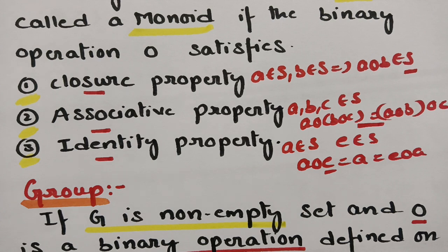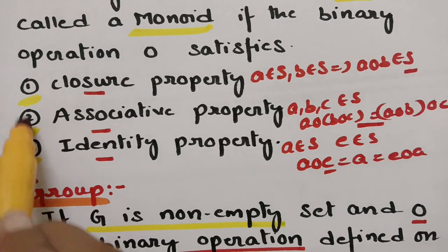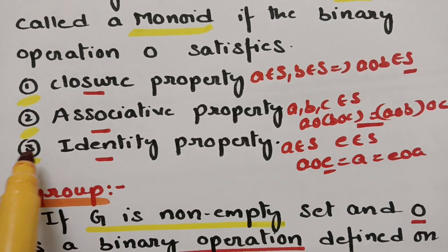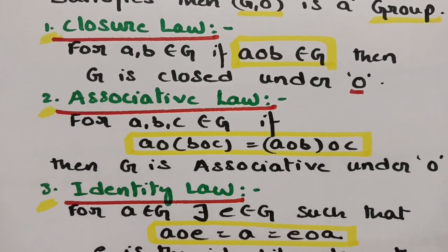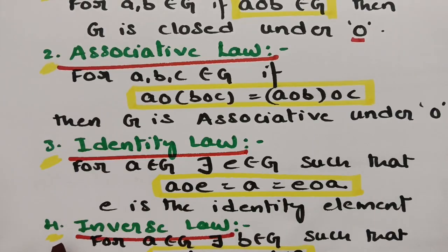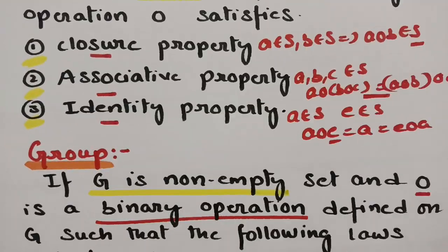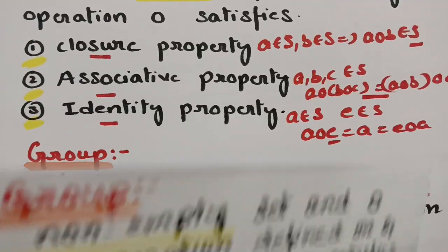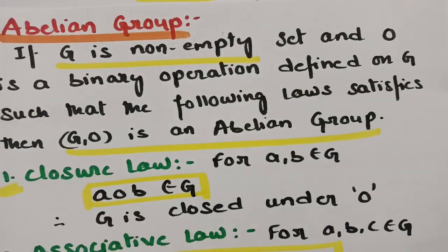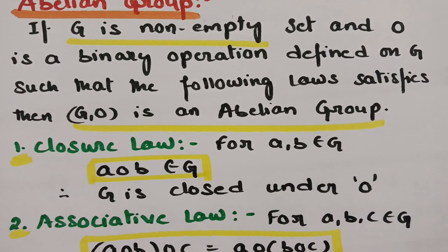To summarize the hierarchy: if it satisfies the first two properties — closure and associativity — then it is a semi-group. If it satisfies three properties, then it is a monoid. If it satisfies all four properties, then it is a group. If it satisfies all five properties, then it is an abelian group.